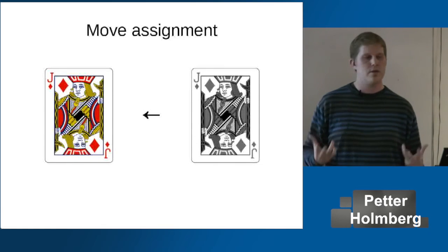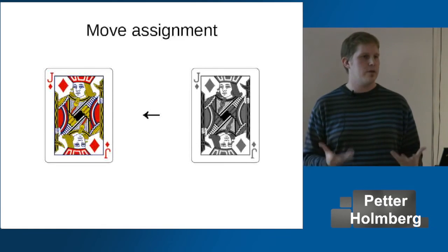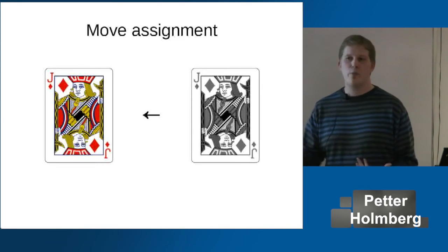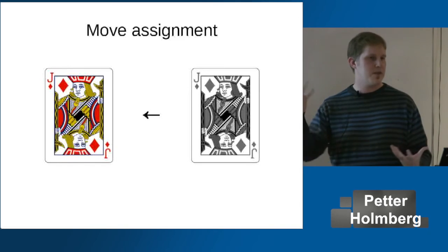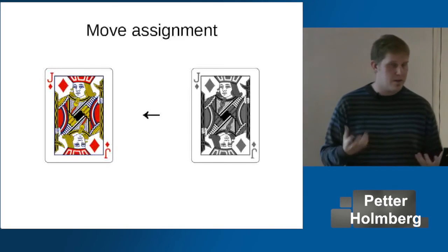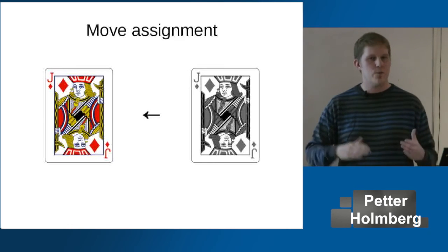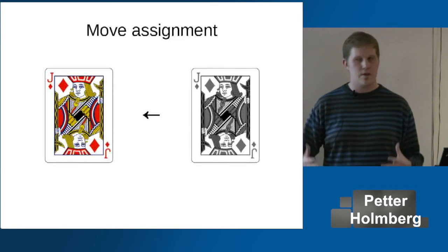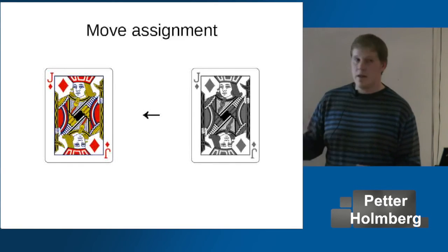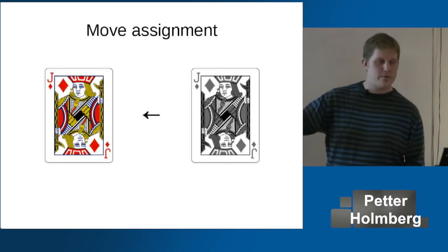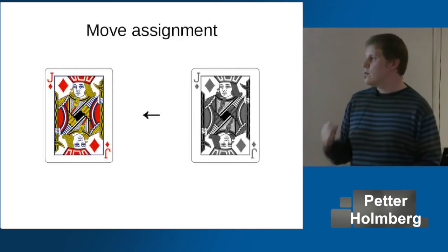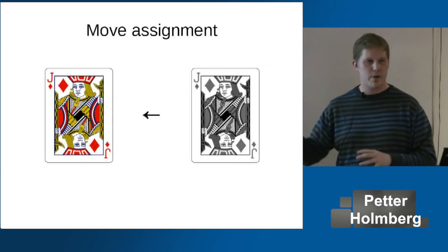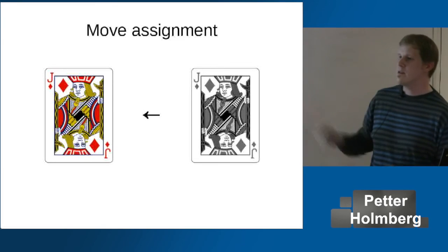Copy assignment fulfills all the requirements of move assignment. When you move, you still get a copy in the sense that the object you move to becomes equal to the object you move from. But the semantics are weaker than copy assignment — we don't require that we have equality when the move is complete. That's great because it means we can mutate the object that we move from, and for composite types we can just transfer ownership of pointers to the remote parts without touching them, making move very efficient.